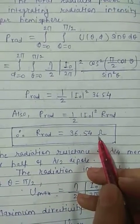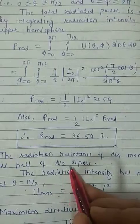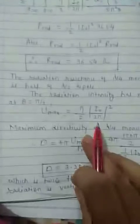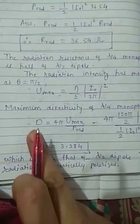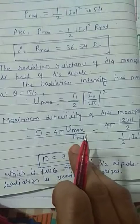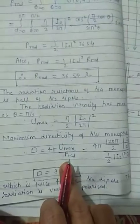Now the radiation intensity of monopole is maximum along theta equal to pi by 2. Now directivity is given by 4 pi into maximum radiation intensity divided by radiated power.